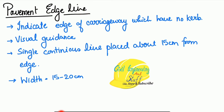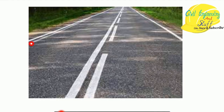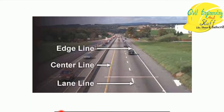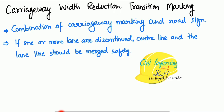Pavement edge lines indicate the edge of the carriageway where there is no curve — curves are already marked with alternate black and white. Edge lines are continuous lines placed 15 to 20 centimeters from the edge of the road. Combining all three elements, the center line demarcates the carriageway into two halves and bifurcates opposite-direction traffic, lane lines divide lanes within a direction, and edge lines mark the boundary of the carriageway.